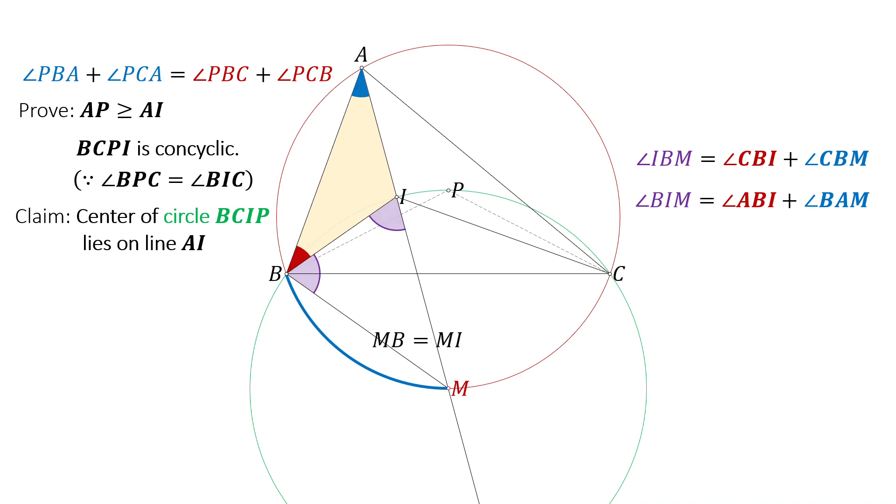By similar reasoning, we know that MC equals MI. This leads us to conclude that the point M, which is the center of circumcircle BCPI, is on the line AI.